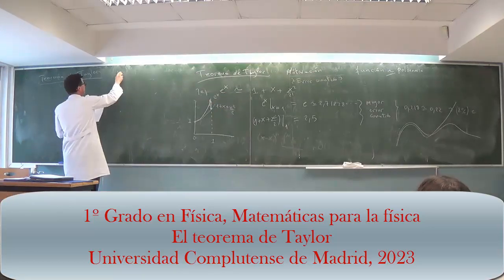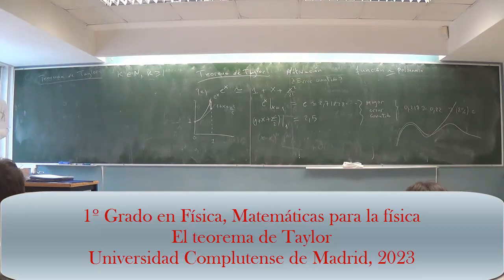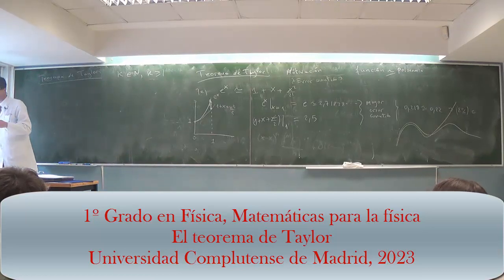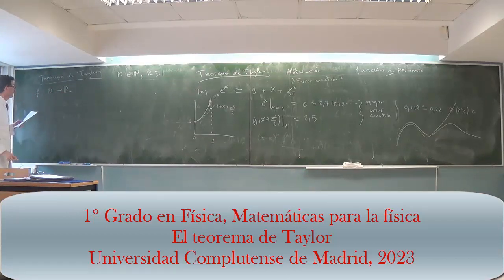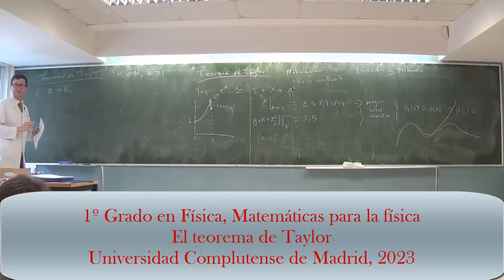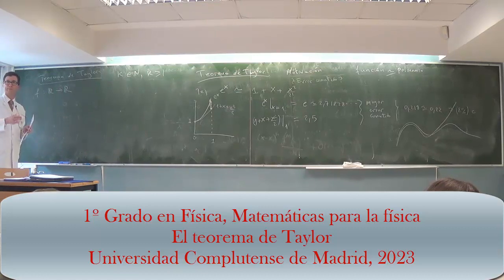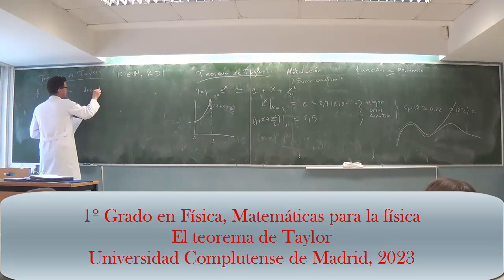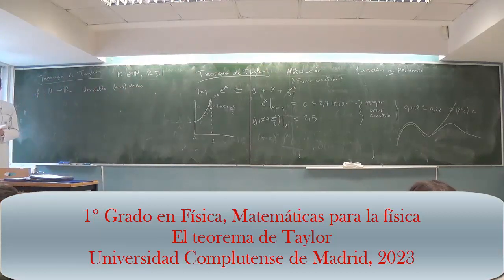Let's state it. K greater than or equal to 1 in N — that keeps track of the order of the expansion. The function I want to approximate is a real-variable function from R to R. I will give myself a smooth function, derivable K+1 times — so I have K+1 derivatives.